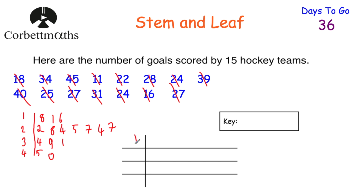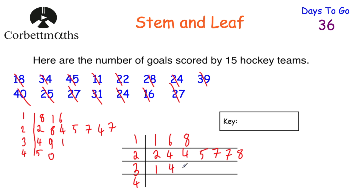Now let's order our numbers. So we've got our tens, twenties, thirties, and forties. For the tens leaves in order: 1, 6, 8. For the twenties: 2, 4, 4, 5, 7, 7, 8. For the thirties: 1, 4, 9. For the forties: 0, 5. So there's our stem and leaf diagram. Now we just need to do a key — I'll pick the biggest number, which is 45. So: 4 | 5 means 45. And that's it — we've drawn our stem and leaf diagram. If you drew a stem and leaf diagram like this, well done.